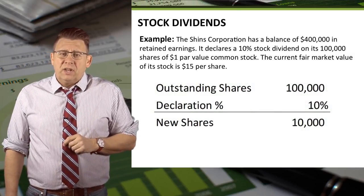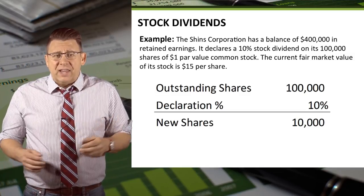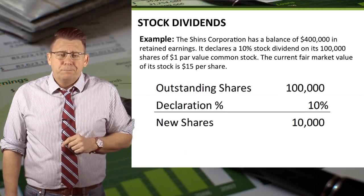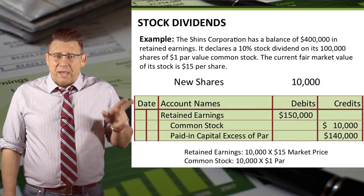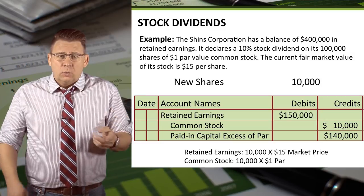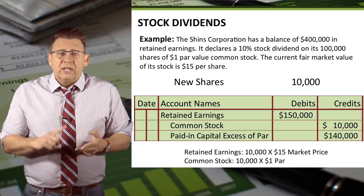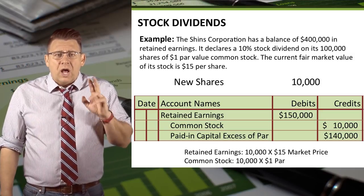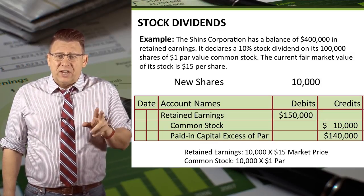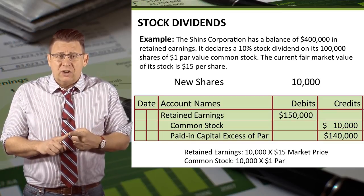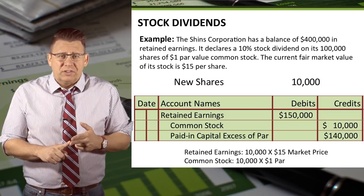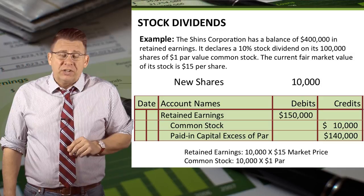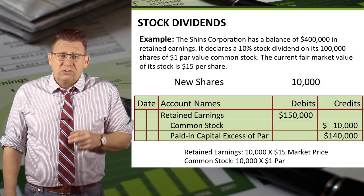Step one is to determine the number of new shares to be distributed — in this case, that's 10,000 additional shares of stock. So retained earnings is debited for $150,000, which is the number of new shares times the market price of the stock. Common stock is credited for $10,000, which is the number of new shares times the par value of the stock. Finally, paid-in capital in excess of par is credited for the difference, which is $140,000.